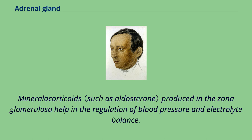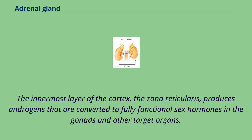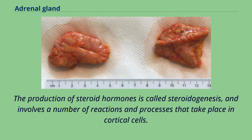Mineralocorticoids produced in the zona glomerulosa help in the regulation of blood pressure and electrolyte balance. The glucocorticoids cortisol and cortisone are synthesized in the zona fasciculata; their functions include the regulation of metabolism and immune system suppression. The innermost layer of the cortex, the zona reticularis, produces androgens that are converted to fully functional sex hormones in the gonads and other target organs. The production of steroid hormones is called steroidogenesis and involves a number of reactions and processes that take place in cortical cells.